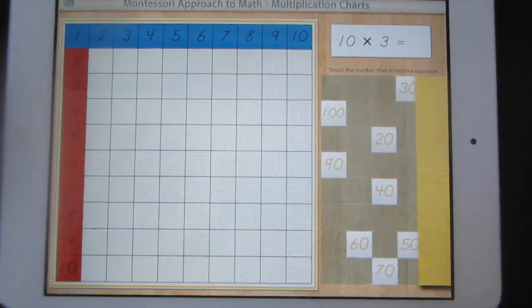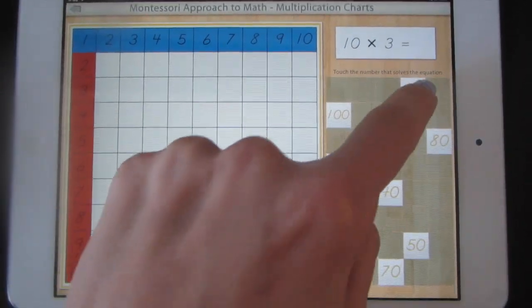Now, the numbers won't appear on the screen. 10 times 3 is 30.